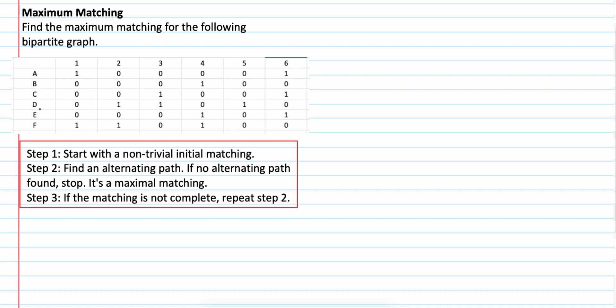6 by 6. A, B, C, D, E, F. 1, 2, 3, 4, 5, 6. We want to assign the row to the column.